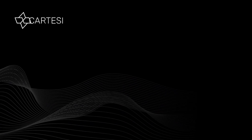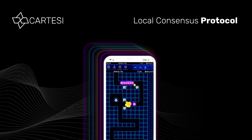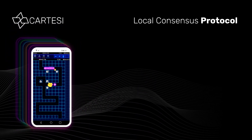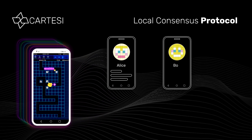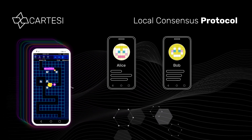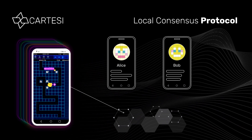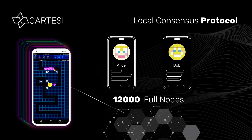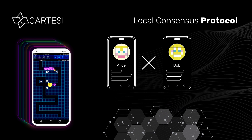Let's now explain the second basic principle of Descartes: the protocol for local consensus. Suppose you want to implement a two-player decentralized game in Ethereum, where players place their bets in crypto and the winner takes the pot. If we implement the logic on the blockchain, every single player's move becomes a transaction, and all game events and transitions are emulated on more than 10,000 full nodes around the world — a massive waste of resources, considering that only the two players are interested in the result. The reasonable solution is to let Alice and Bob play off-chain while preserving the ability to enforce correct results on-chain.